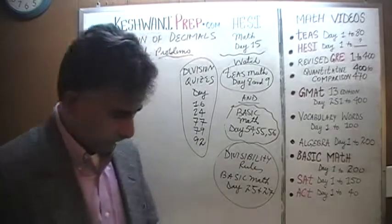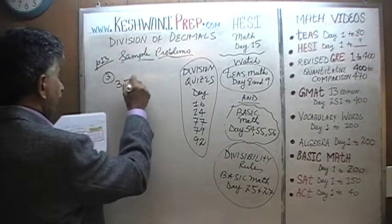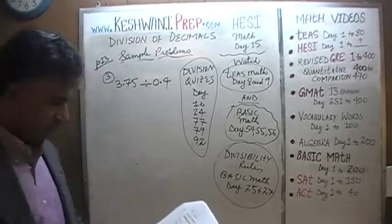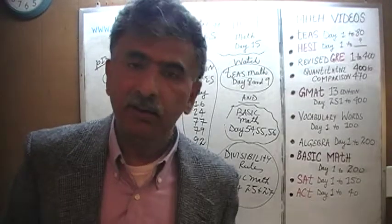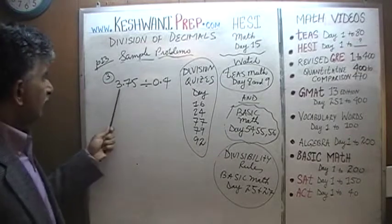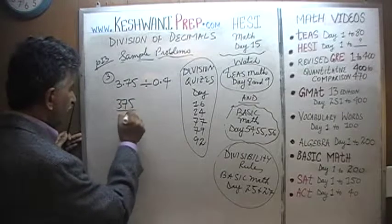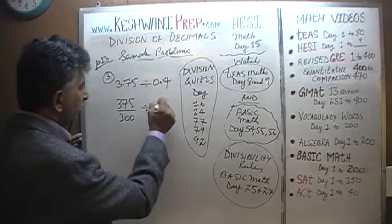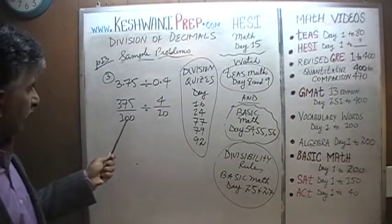Problem number 3: 3.75 divided by 0.4. The exact same logic applies. 3.75 can be written as 375 over 100, and 0.4 can be written as 4 over 10. If you divide 375 by 100, you move the decimal two spots to get 3.75.